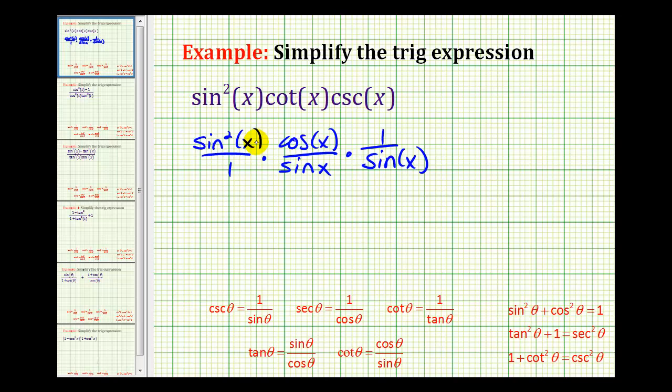Sine squared x is equal to sine x times sine x. So we have two factors of sine x in the numerator and we also have two factors of sine x in the denominator. So these simplify out with sine squared x and we're left with cosine x over one or just cosine x. And now this expression is simplified because it's written in terms of one trig function.